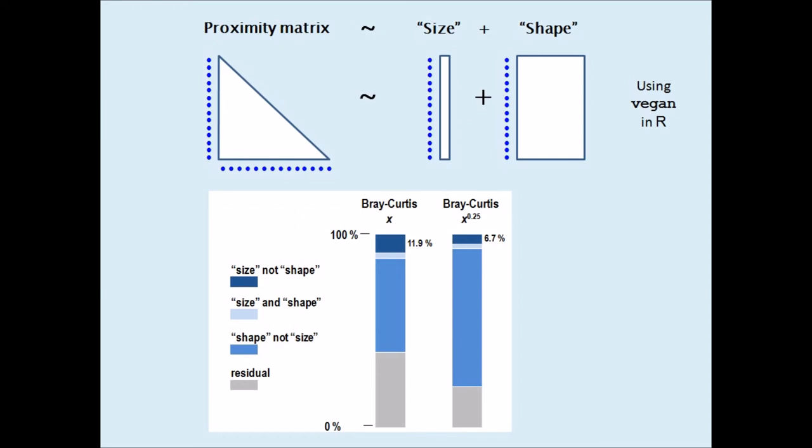In other words, conclusions about differences between the samples using the Bray-Curtis, for example in a permutation test, would be influenced by the fact that differences in total abundance are being incorporated into these proximities.